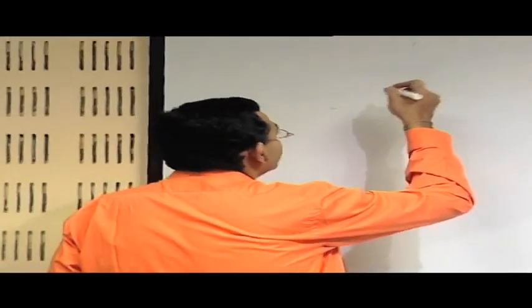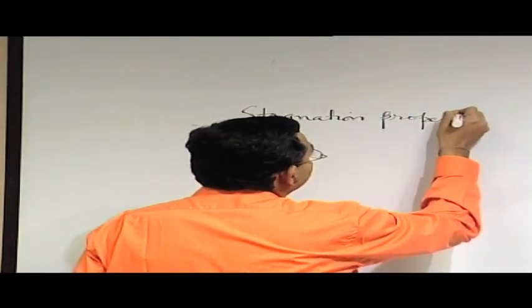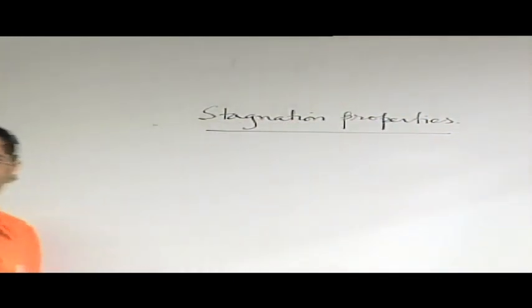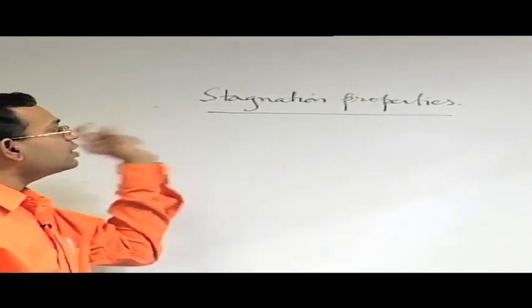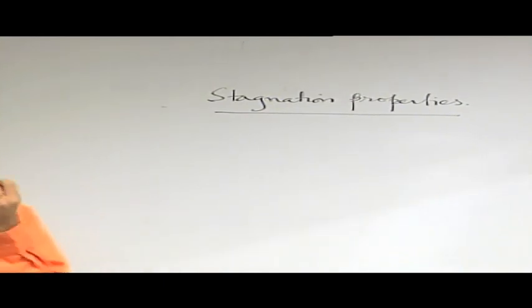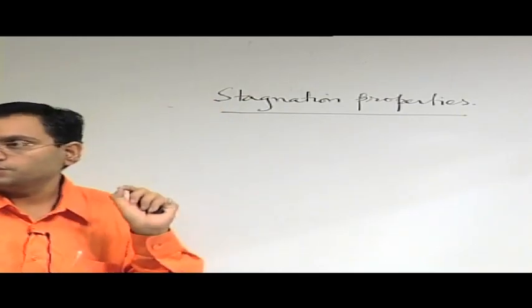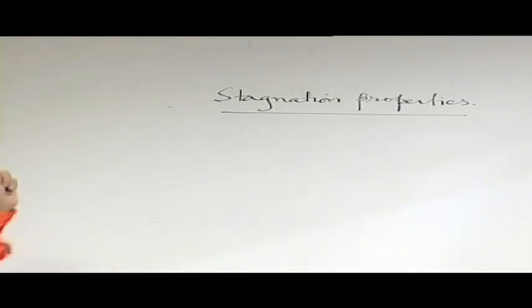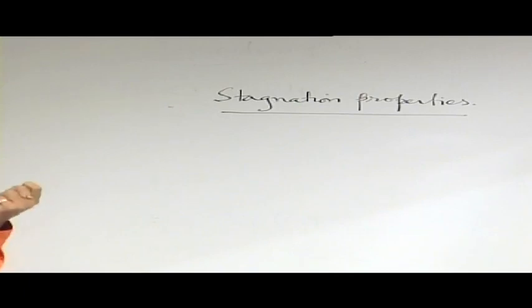We will continue with our discussions on compressible flows and now discuss something known as stagnation properties. This term stagnation we have come across in earlier topics in fluid mechanics. One of the literal meanings is that the fluid is brought to rest at a point so that the velocity is zero. However, a stagnation point is where velocity is zero, but that does not suffice the full description of stagnation properties. We will now look more deeply into the important properties which dictate the nature of the process by which the stagnation state is achieved.